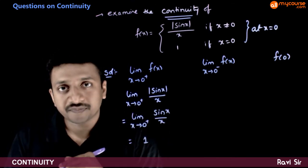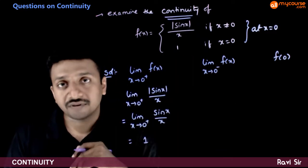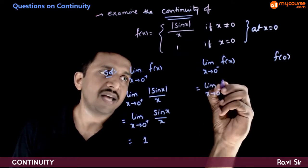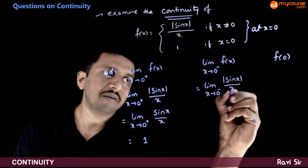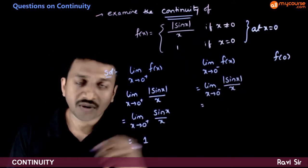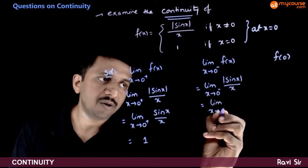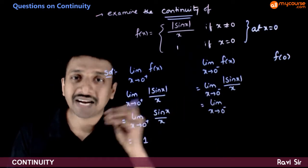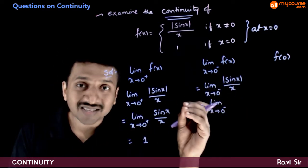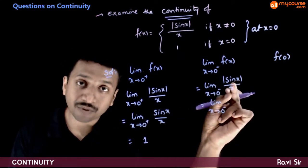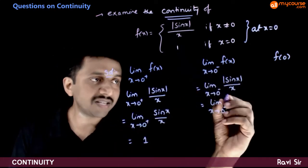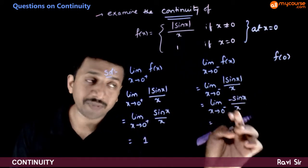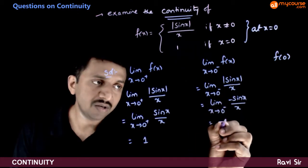Now, limit x tends to 0 minus of f(x) is |sin x| / x. That is equal to limit x tends to 0 minus. As x tends to 0 minus, x is in the negative neighborhood of 0, so the angle x is in the fourth quadrant. Therefore sin x is negative, so |sin x| is nothing but minus sin x. So the expression becomes minus sin x / x. Since sin x / x tends to 1, minus sin x / x tends to minus 1.